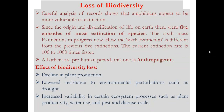If mass extinction takes place, three important consequences follow. First, declining plant production will decrease the productivity of the biosphere, adversely affecting all trophic levels. Second, there is lowered resistance to environmental perturbations such as droughts and floods. Third, increased variability in ecosystem processes such as plant productivity, water use, and pest and disease cycles leads to complete ecosystem collapse.